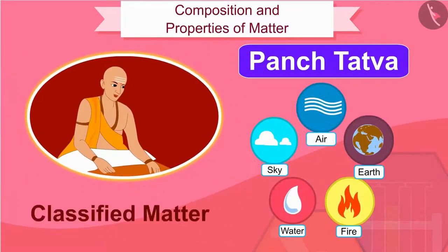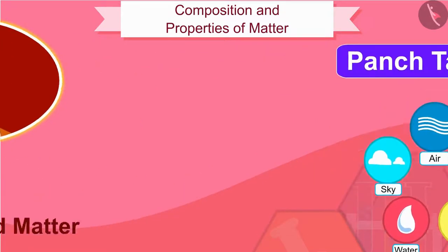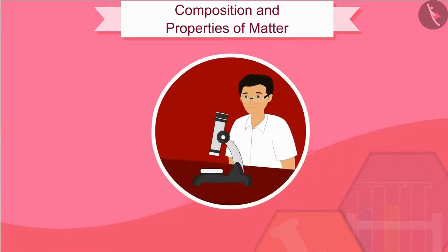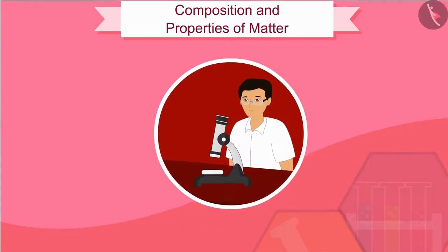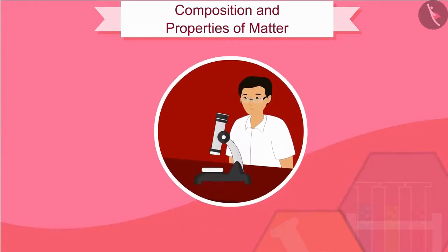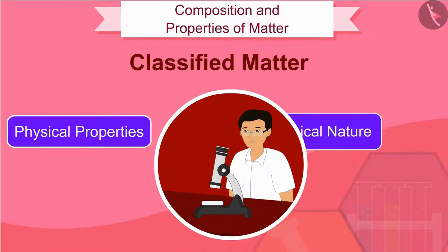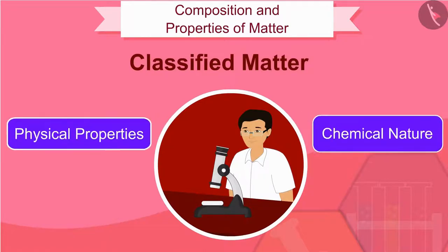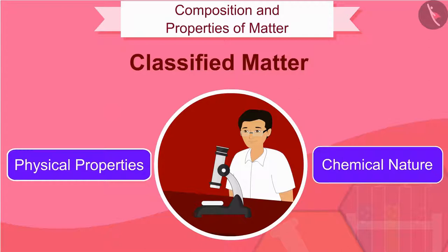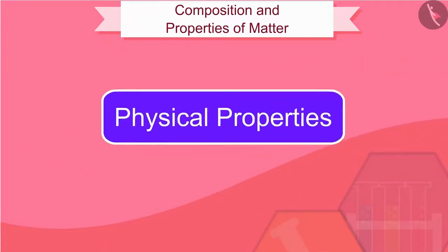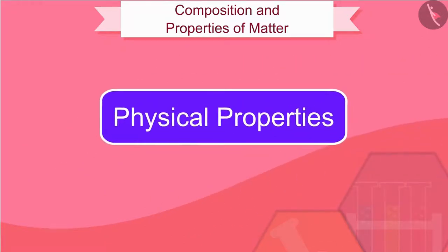Philosophers of the time classified matter in a similar way. Modern scientists have evolved two types of classification of matter based on their physical properties and chemical nature. Let us learn about matter based on physical properties in this video.